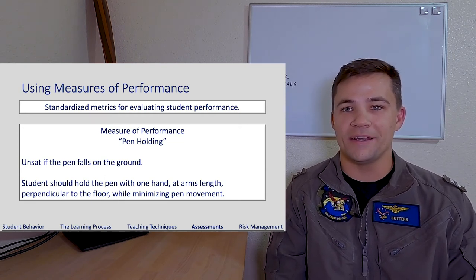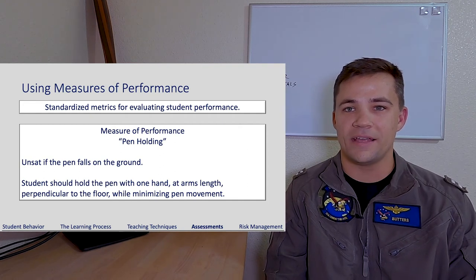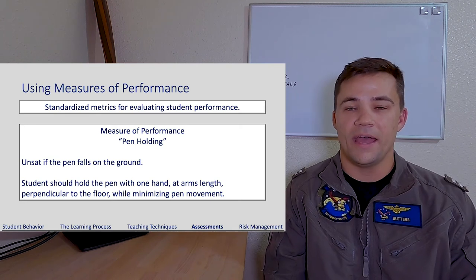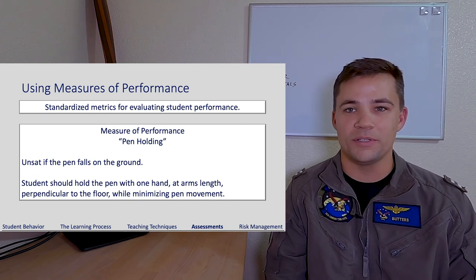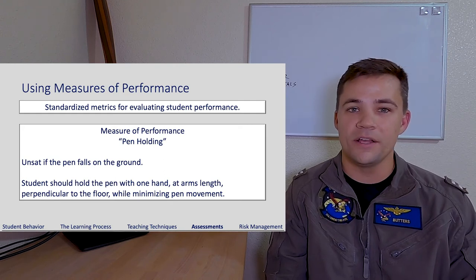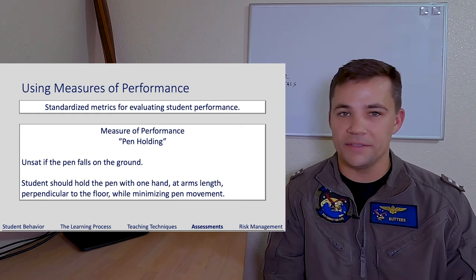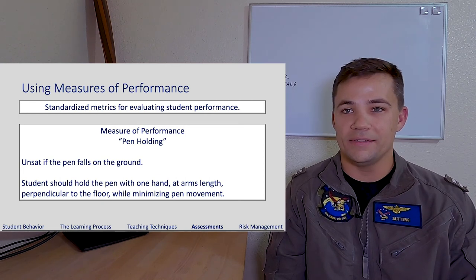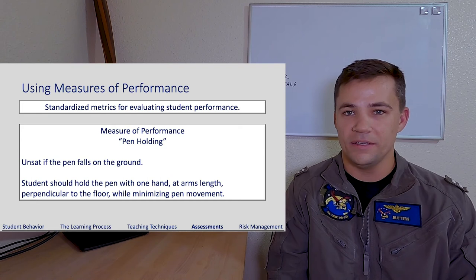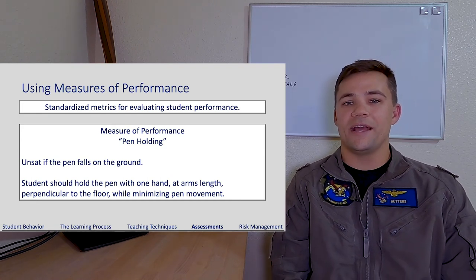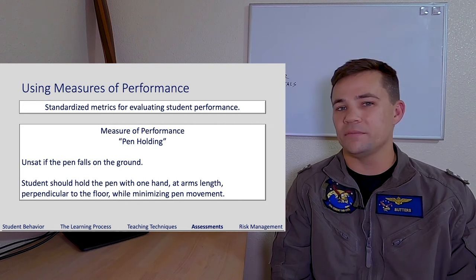For example, the measure of performance for a line item of pen holding might have defined auto-fail criteria — like it's automatically unsatisfactory if the pen falls on the ground. The standard at level two or three pen holding might state: 'Student should hold the pen with one hand at arm's length, perpendicular to the floor, while minimizing pen movement.' Some criteria are easy to assess: is it at arm's length, held with one hand, perpendicular to the floor? Others, like 'minimizing pen movement,' are harder to interpret consistently from instructor to instructor.